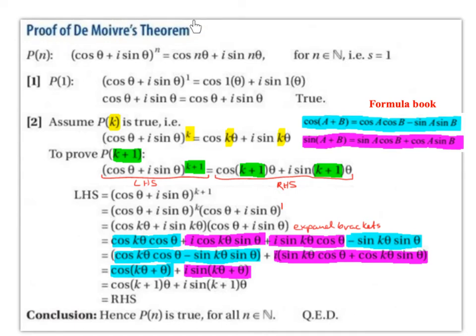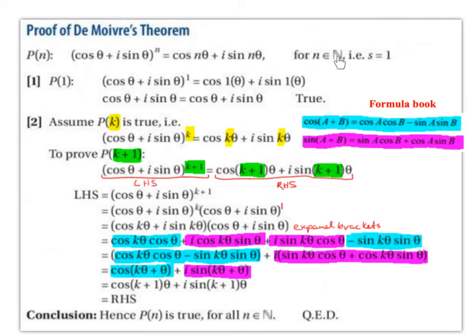Proof of De Moivre's theorem. De Moivre's theorem is a theorem used in complex numbers, but the proof of it is done using proof by induction. So P(n) is: cos θ + i sin θ to the power of n — basically cis θ to the power of n — is equal to cos nθ + i sin nθ, for all n values elements of the natural number set.